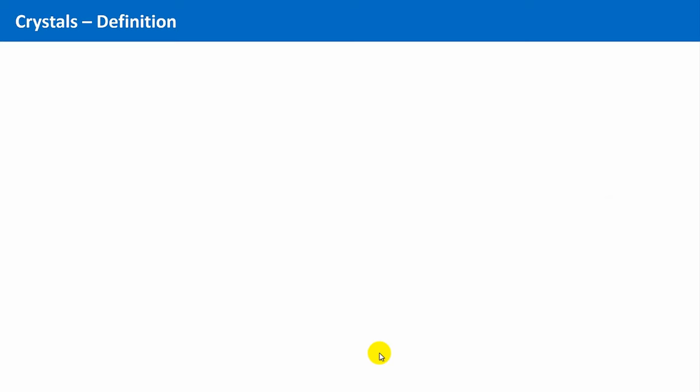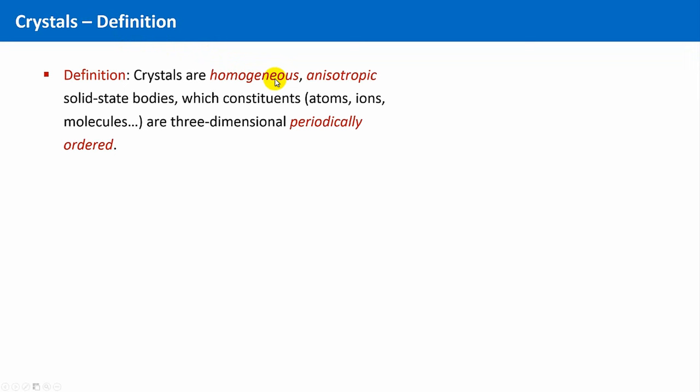Apart from the circumstance what the ancient Greeks had thought, crystals have a clear definition. Crystals are solid-state bodies which are homogeneous, anisotropic, and are composed of constituents that are strictly three-dimensional periodically ordered. This last attribute is the most important, or the most prominent one. It is the very unique feature of this state of matter.